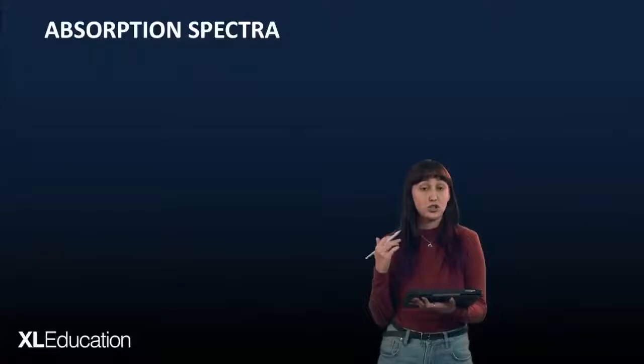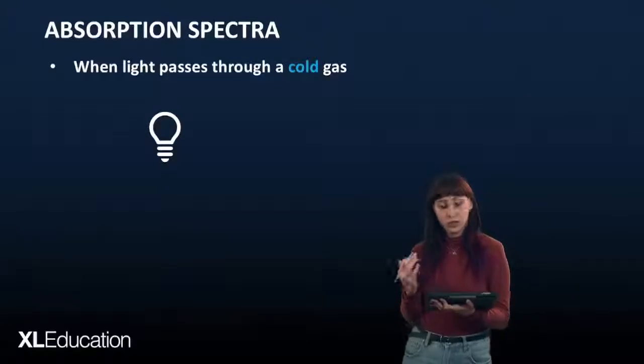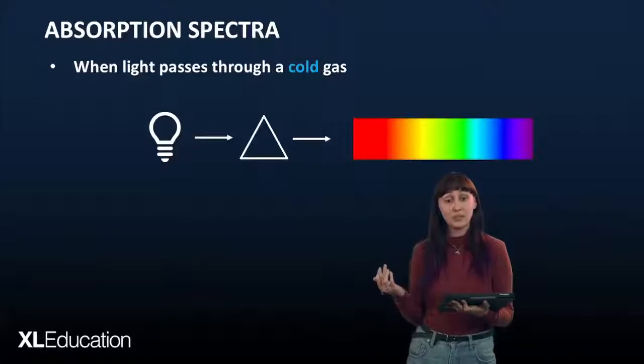Next thing we're going to look at is the absorption spectra. While previously the emission spectra was due to a gas being heated and that giving off light, absorption spectra is due to white light being passed through a cold gas. If we take white light and we pass it through a prism or diffraction grating, we see the following, which is the continuous spectrum, consisting of all lights in the visible spectrum.